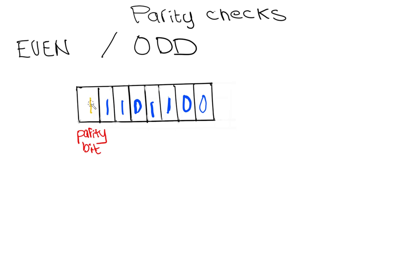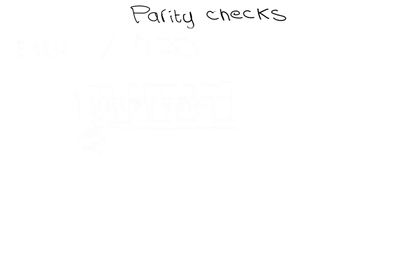However, if the byte is using odd parity, then the parity bit needs to be set to 1, since we need to have an odd number of 1 bits in the byte. We thus get 1, 1, 1, 0, 1, 1, 0, 0. Before data is transferred, an agreement is made between sender and receiver regarding which type of parity is being used. Parity checks are therefore used as a type of transmission protocol.